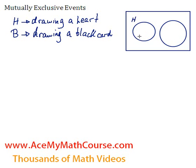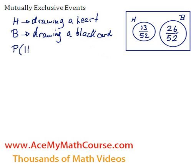So what is the probability of drawing a heart? Well, there are 13 hearts out of 52 cards. And for black cards, there are 26 black cards out of 52. So these events are completely mutually exclusive — they cannot happen at the same time. The probability of H and B is 0, and that defines a mutually exclusive event. If you have two events and the probability of one AND the other is 0, they're mutually exclusive.